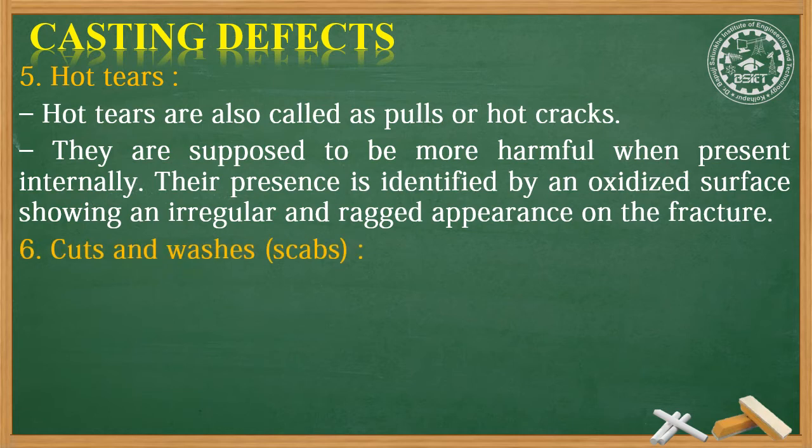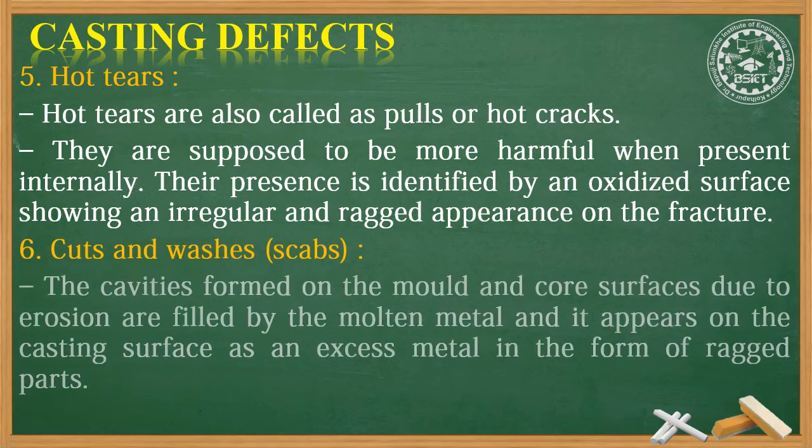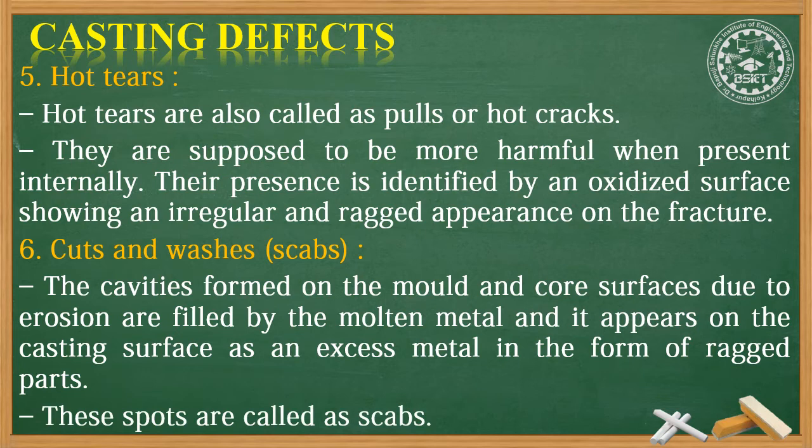Then we have cuts and washes. The cavities formed on the mold and core surfaces due to erosion are filled by the molten metal, and it appears on the casting surface as excess material in the form of ragged parts. These spots are called scabs.